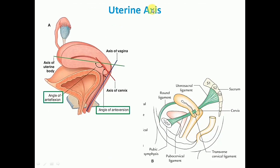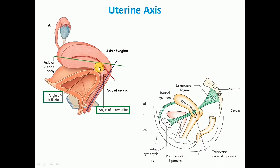The next important support is the uterine axis, or the position of the uterus itself. The uterus is bent forward in relation to the vagina and also bent upon itself. There are two important angles: the angle of anteversion, which is the forward angle between the long axis of the cervix and the axis of the vagina at about 90 degrees, and the angle of anteflexion, which is the angle between the axis of the body and the axis of the cervix at about 125 degrees. The anteverted position of the uterus prevents it from sagging down through the vagina.